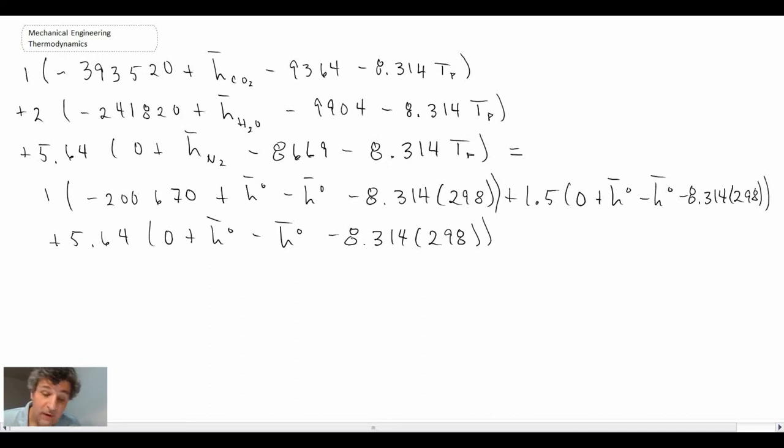So that's the equation that we get by subbing in the values from the table into the first law for constant volume combustion and adiabatic flame temperature. Now what I'll do is I'll rewrite that, and we end up with the following equation.